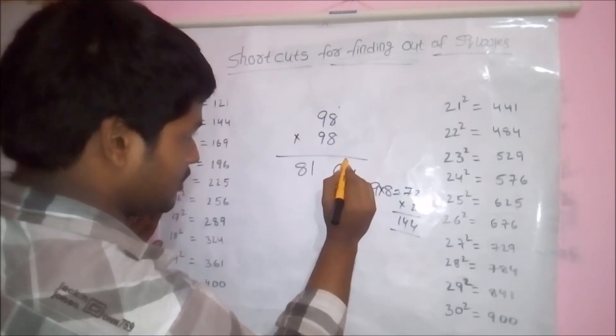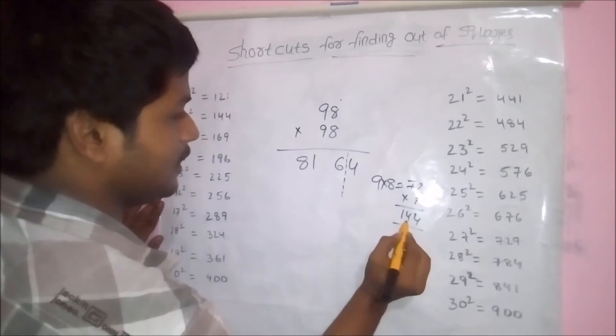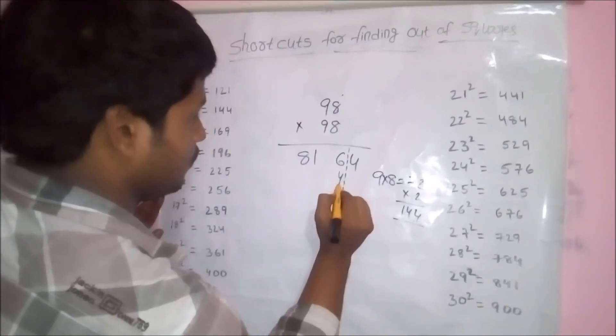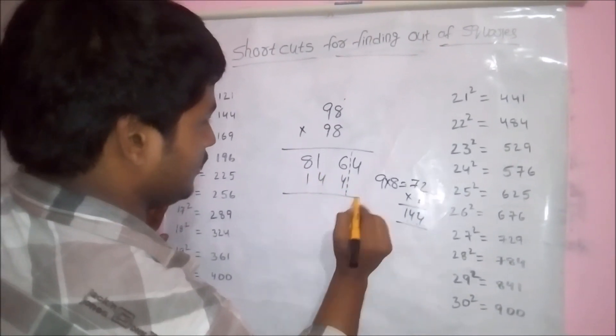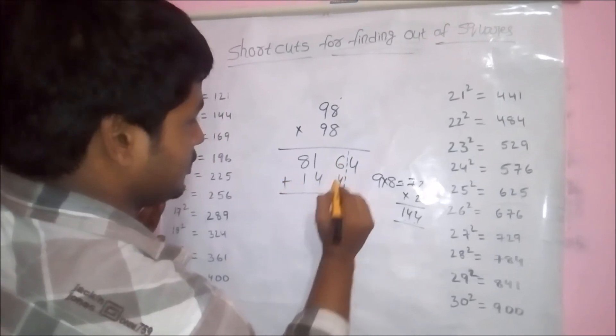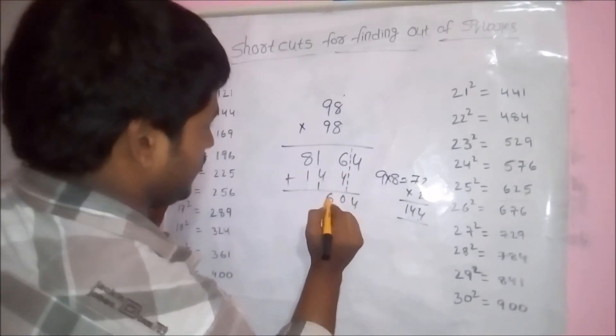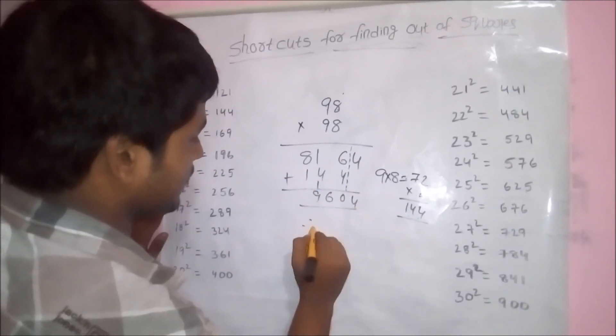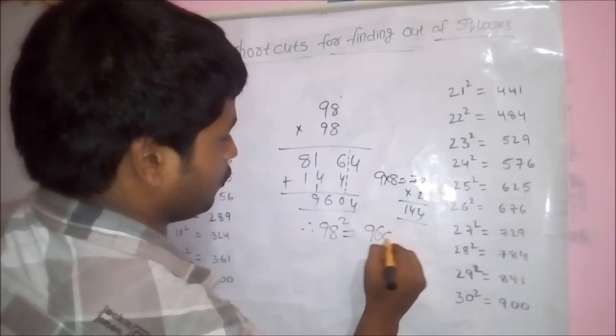First of all, for last digit, we have to dot it like this. And replace the 144: 4, 4, 4, 1. That means 4, 6 plus 4, 10, 6, 9. That means 98 square becomes 9604.